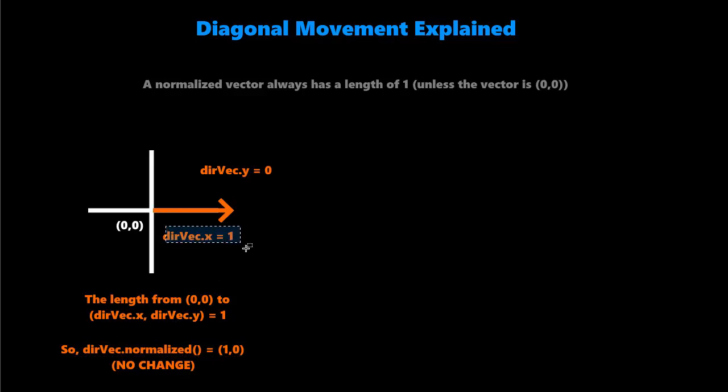So when we multiply this x by our speed, we effectively just get our speed in the x direction, and then we multiply this by our speed for the y direction, and we get 0 because we're not moving up or down.